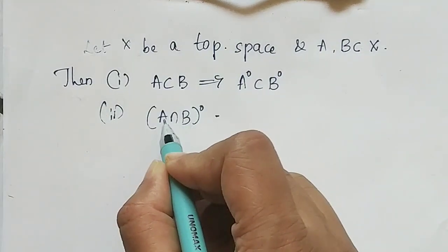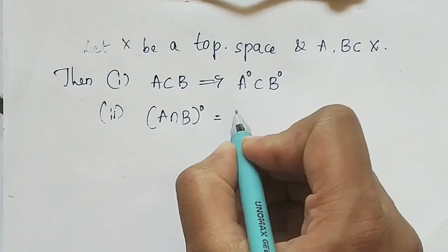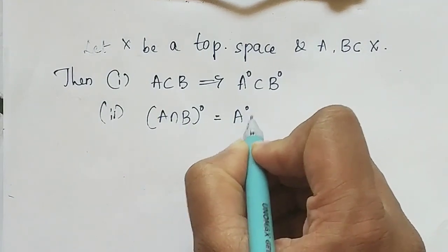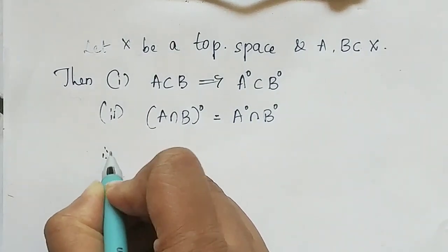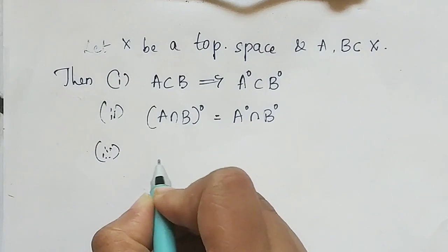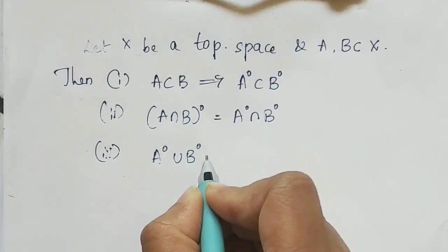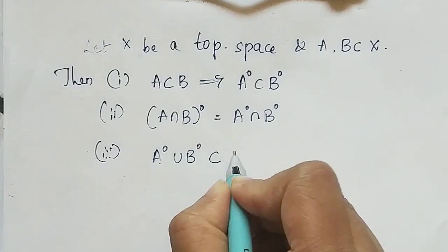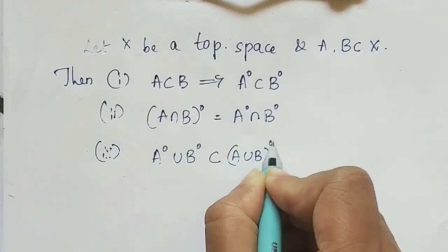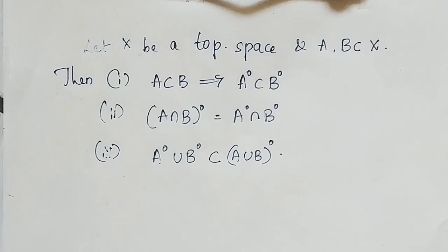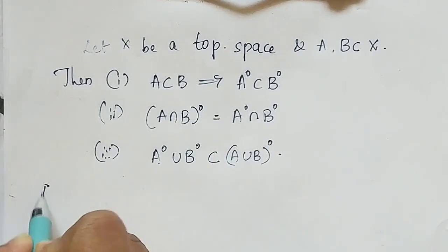The second result: the interior of A intersection B is equal to A interior intersection B interior. The third result: interior of A union interior of B will always be a subset of A union B interior. Let us learn all these results with proof.